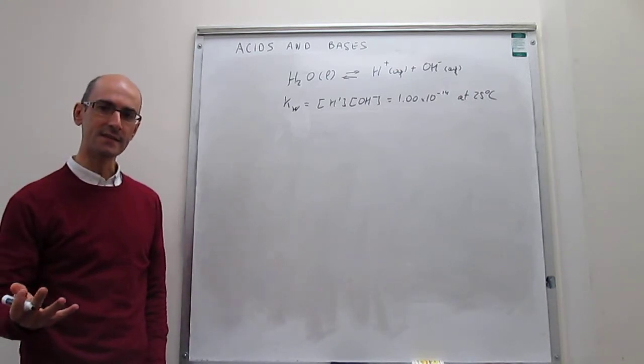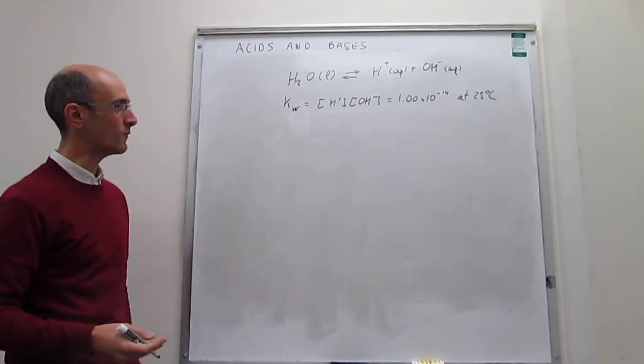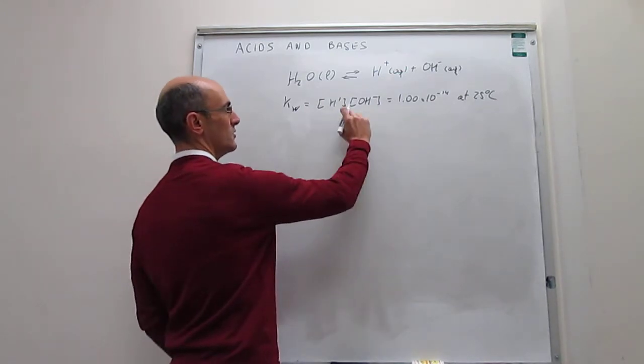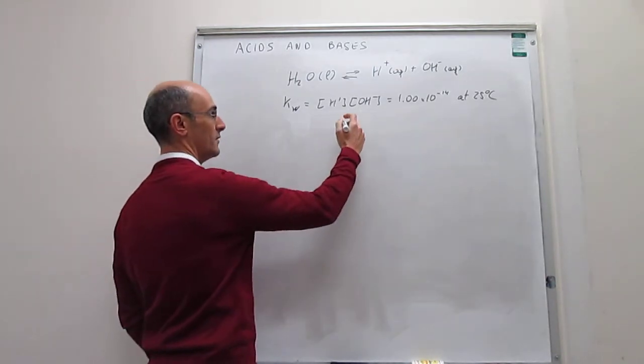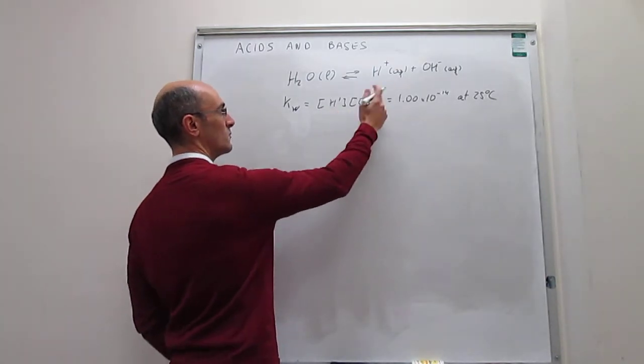So if you have pure water, distilled water at 25 Celsius, then with this value of the equilibrium constant, you can calculate right away what the concentration of protons and hydroxide would be. Notice that the concentration of protons and hydroxide should be exactly the same.